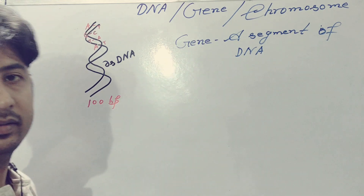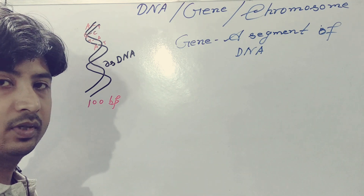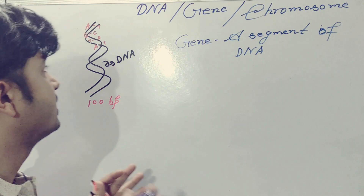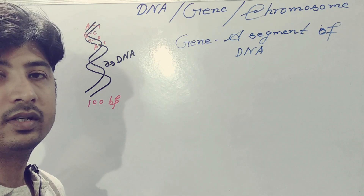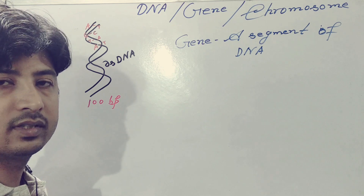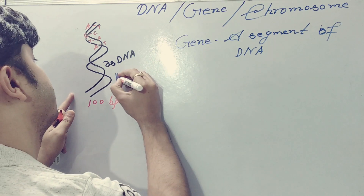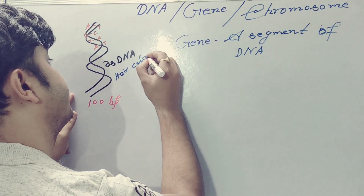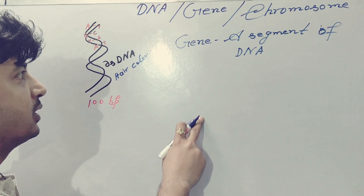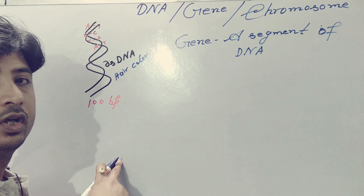A gene is a segment of DNA which performs a particular function. So this particular gene — suppose I give it a name — it is responsible for the color of our hair. My hair is black; somebody's hair is a different color. So this segment of DNA is responsible for hair color, and the gene will produce RNA, and from there, protein.